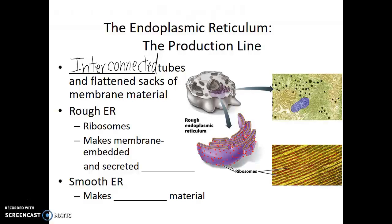There are two general categories of endoplasmic reticulum: the rough ER and the smooth ER. When scientists were first observing the cell with microscopes and discovering these organelles, one type of ER looked very rough, like sandpaper — it had a bunch of little things embedded on its surface. It turns out those things are ribosomes, and ribosomes are sites of protein synthesis. So if the rough ER is covered with ribosomes, we know proteins are being made there.